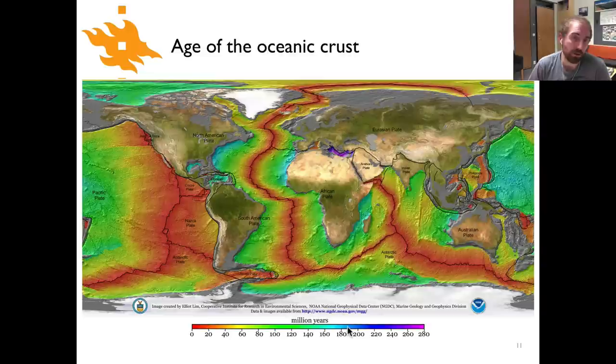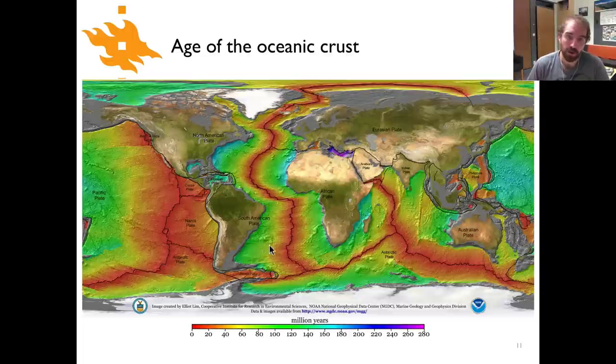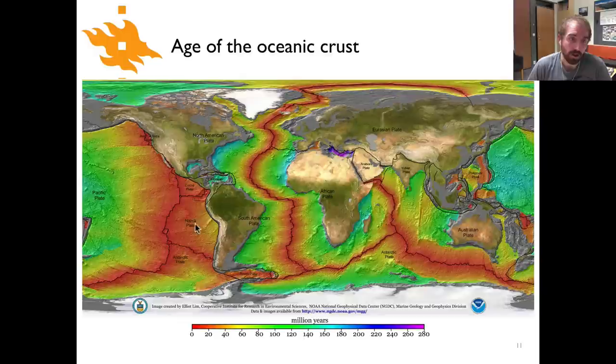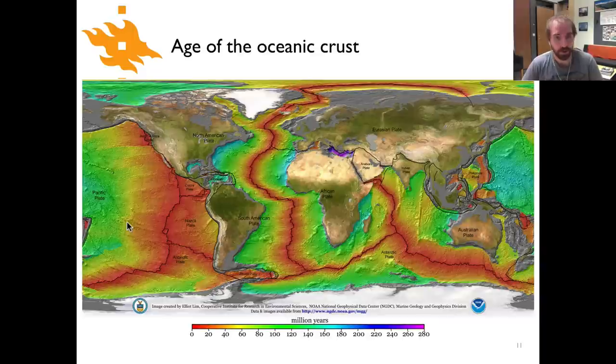It tells us a couple interesting things. First off, we can see something interesting about the spreading ridges and the relative rates of spreading. If we compare the mid-Atlantic ridge, which is shown here in the black line, to the spreading in the eastern part of the Pacific Ocean, you can see that the zone of red that is close to the spreading ridge—that's the youngest material—is relatively narrow in the Atlantic compared to the Pacific, where it's much wider. That tells you in the Pacific that the plates are moving apart much more quickly than we see spreading in the mid-Atlantic.